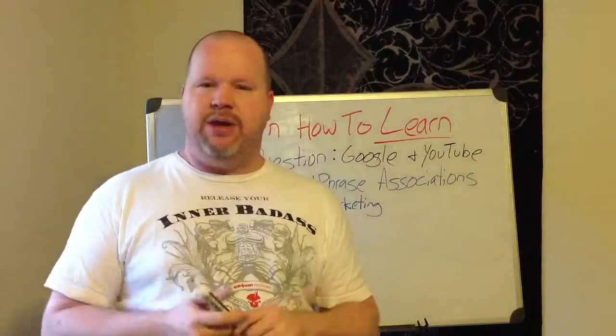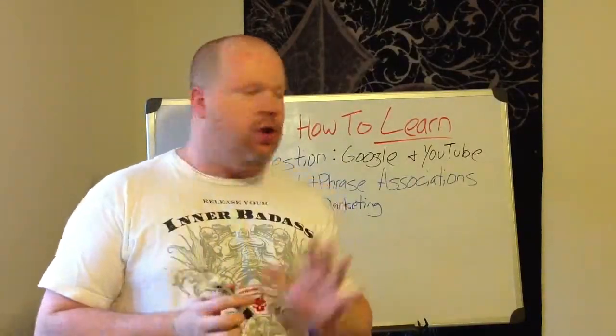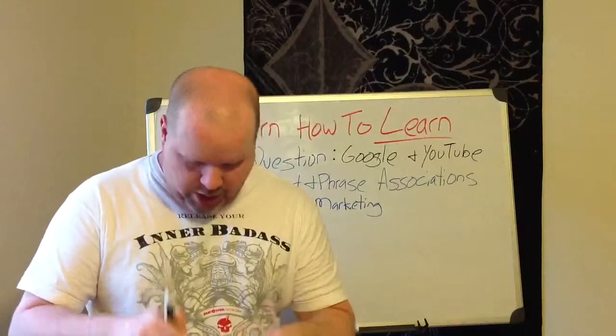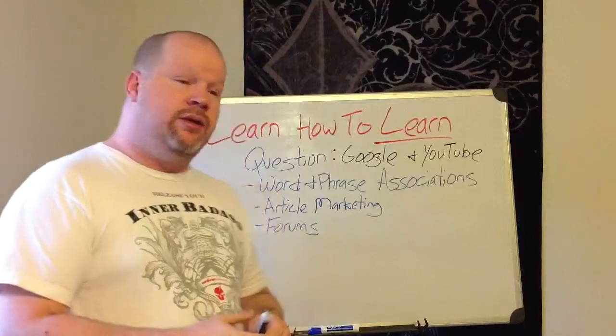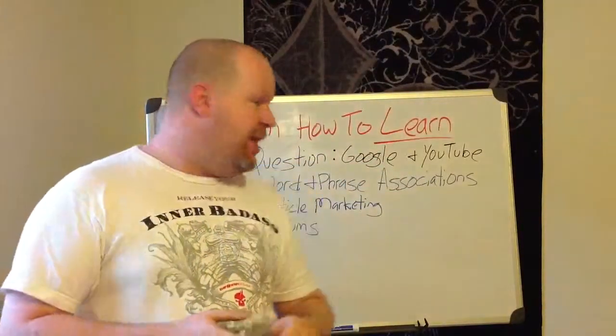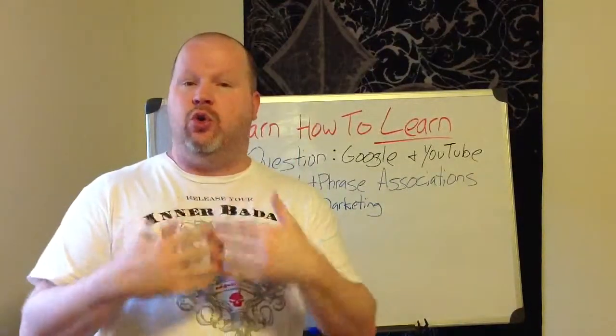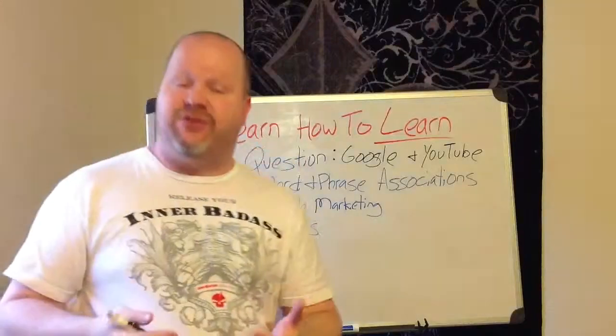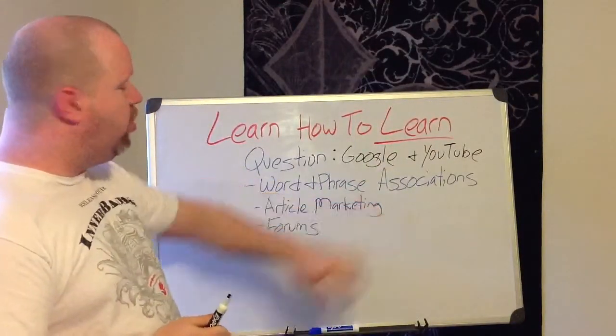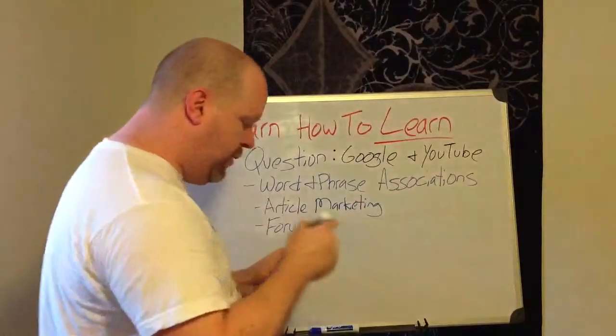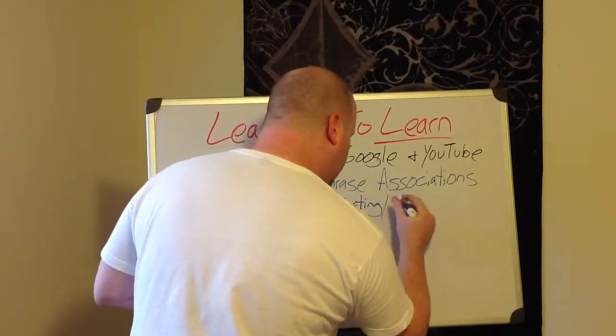You can start using Google and YouTube to type in your phrase, article marketing. Now as you start typing, guys, and this is the meat and potatoes right here, as you start typing, don't just plug away looking down and then hit enter. Slow down, type in the word article, and then see the suggestions that both Google and YouTube will give you. You might come across lots of other options because Google gets these searches all the time and it's trying to help you. You can use that to your advantage to help you with your word and phrase association.